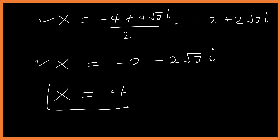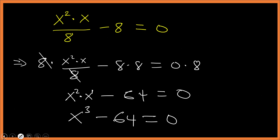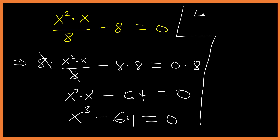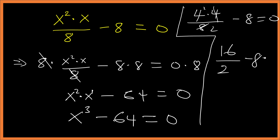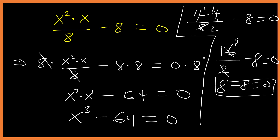We have two complex solutions and the only real solution is x equals 4. Let's verify: substituting x equals 4 gives 4 squared times 4 over 8 minus 8 equals 0. That is 16 times one-half minus 8, which is 8 minus 8 equals 0. Hence proved.